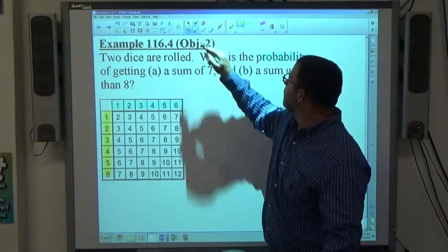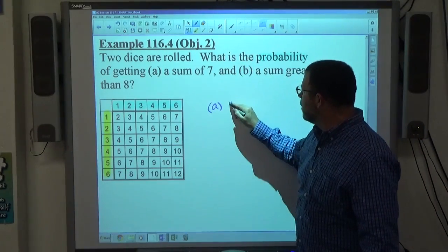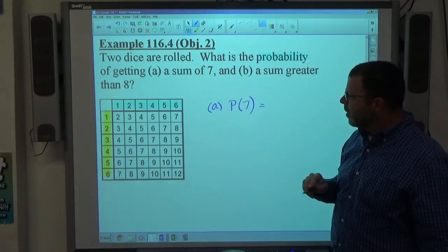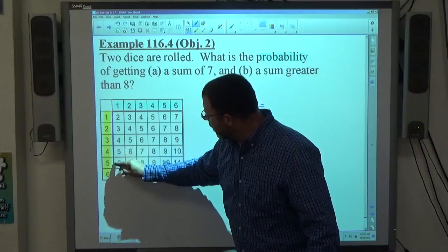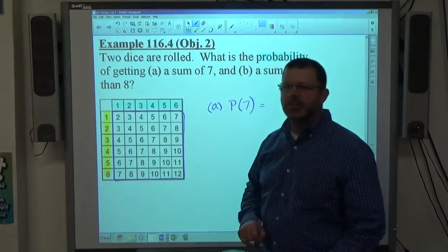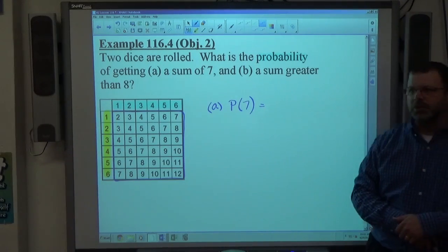We're playing some type of board game. So for part A, it says the probability of getting the sum of 7. So what we're looking at here is within this square, that's every possible outcome. And if we count those up, there's 36 of them.